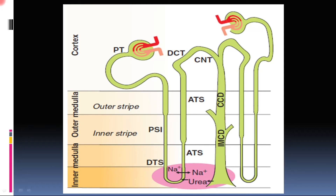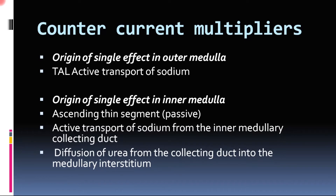The loop of Henle is where the counter current system creates the hyperosmolarity and gradient in the medulla. To understand the counter current multiplier, it must be broken into two steps: first, the origin of the single effect, and second, the multiplication of that single effect. The counter current multiplication can be divided into these two consecutive steps — the first being the origin of the single effect when a single pass of filtrate occurs, and the second being how this effect gets multiplied repeatedly.